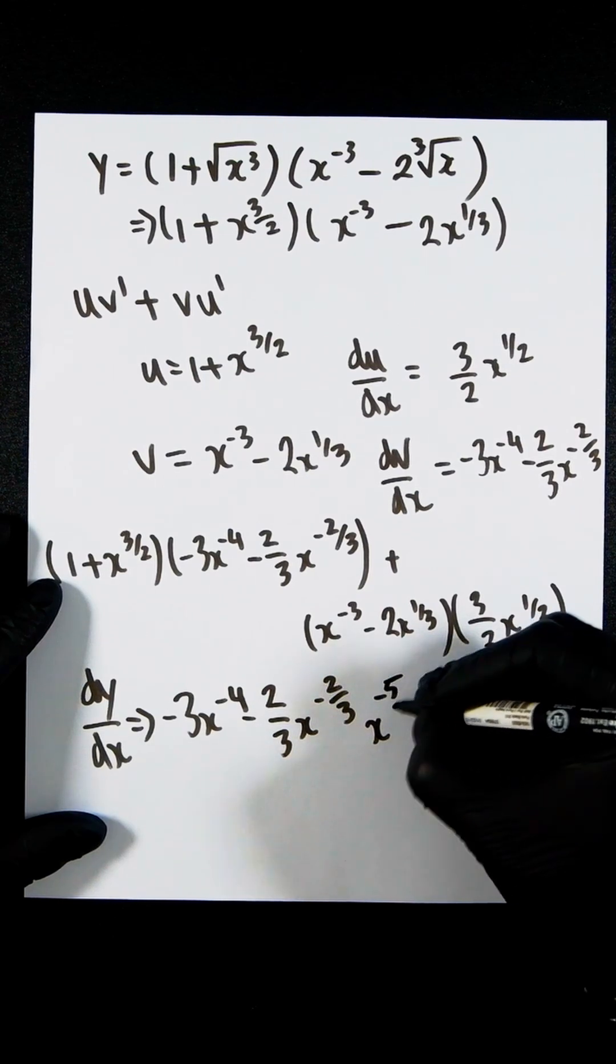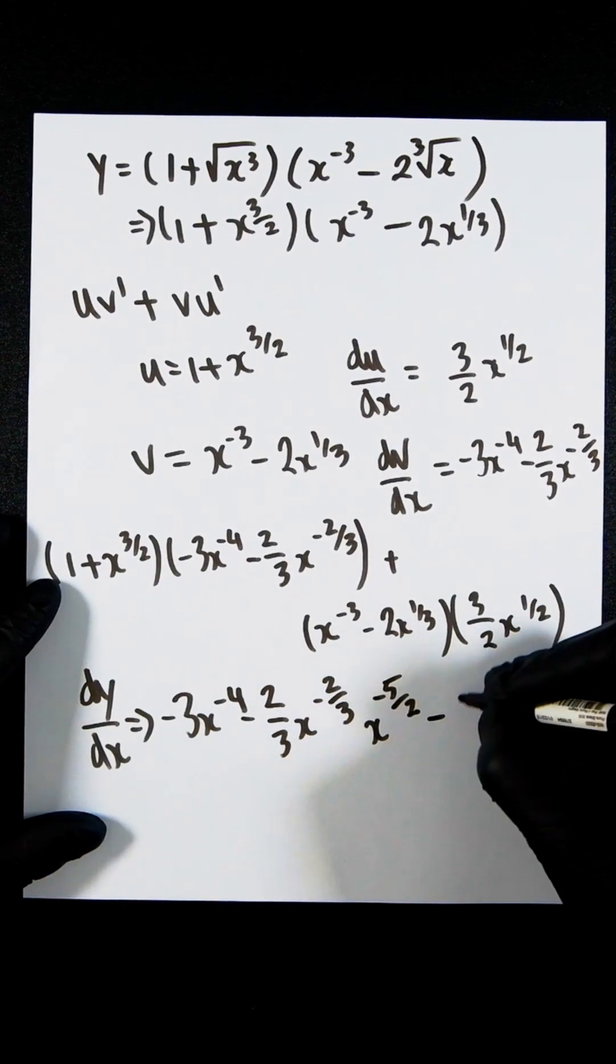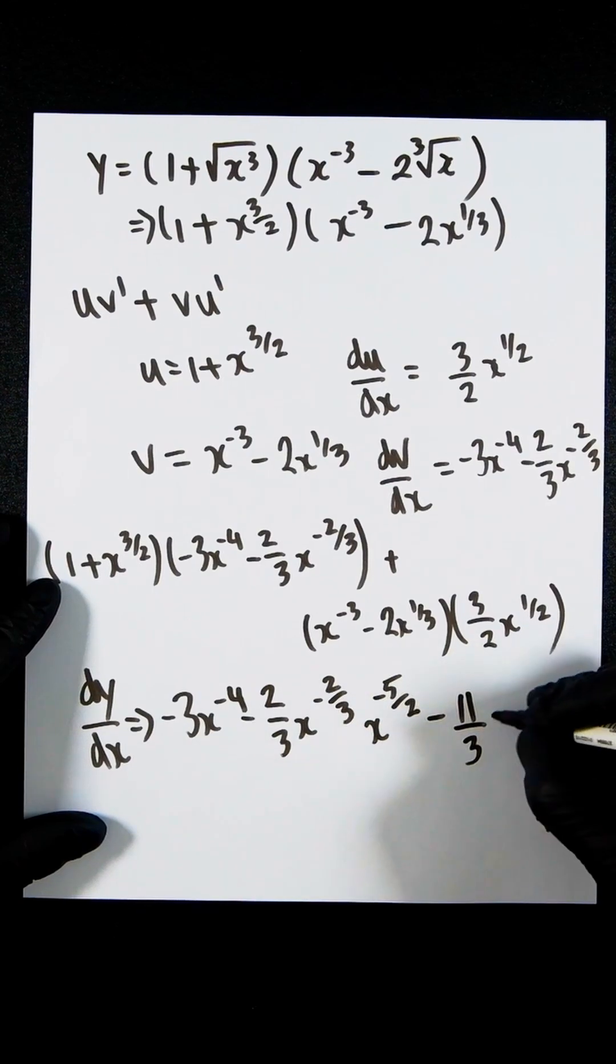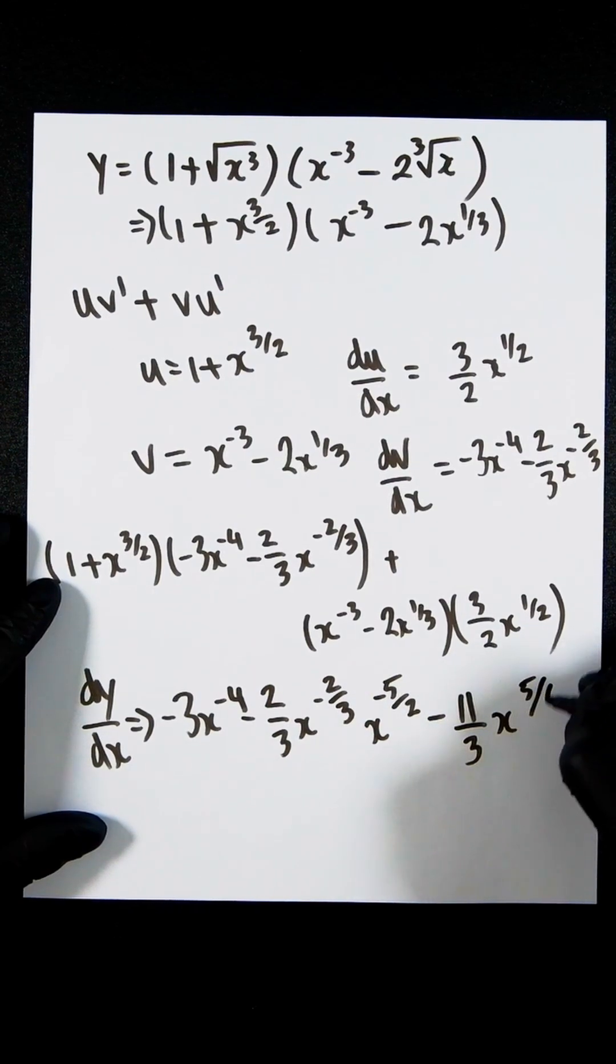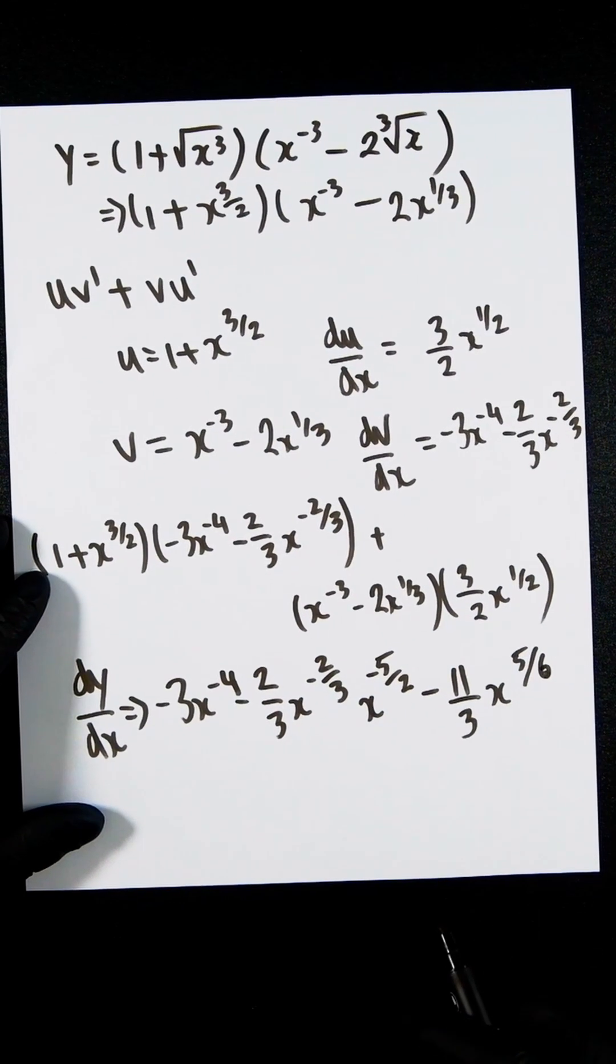3x to the minus 5 over 2 minus 11 over 3 x to the power of negative 5 over 6.